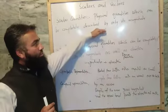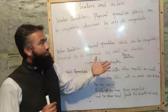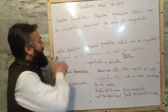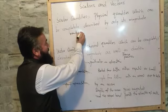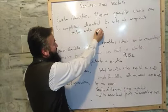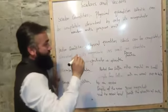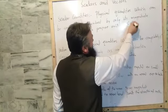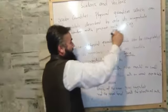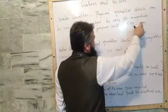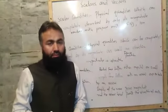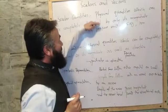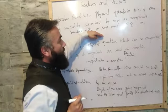Scalar quantities are those quantities which can be completely described by only their magnitude. What is magnitude? A number with a proper unit is called magnitude. For example, 5 kilogram — 5 is a number and kilogram is a unit, so 5 kilogram is a magnitude. Similarly, 10 meter — 10 is a number and m is a unit, so 10 meter is a magnitude. So scalar quantities can be described only by magnitude.